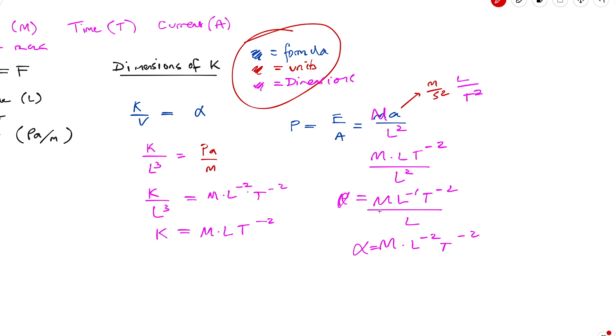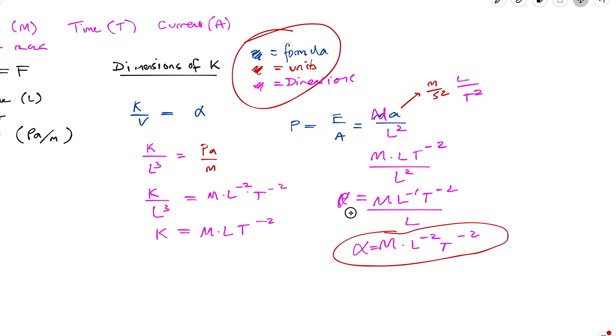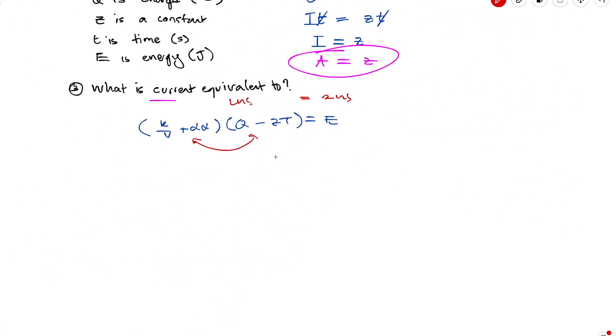So we already got the dimensions of α in the process. So, excuse my typo over here, α was this here. This is the dimensions of that first bracket. So ML to the negative two, T to the negative two. So we can write that down. So that's ML to the negative two, T to the negative two.